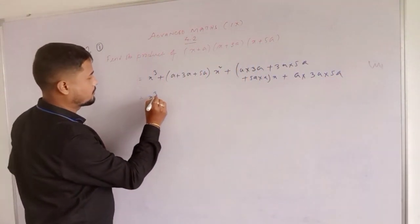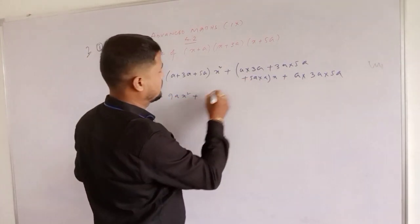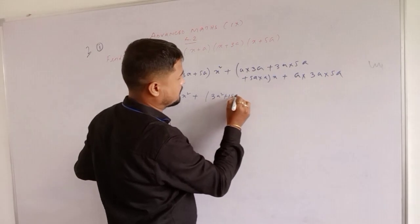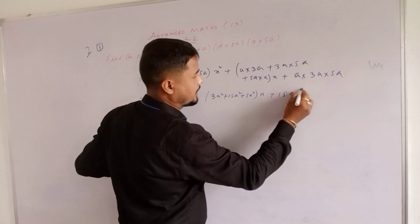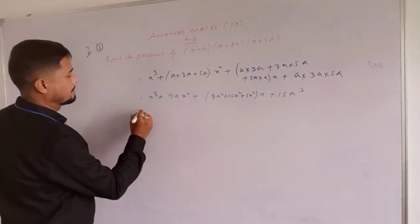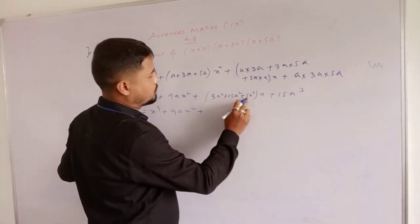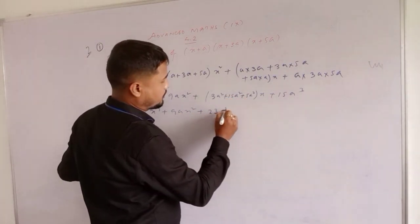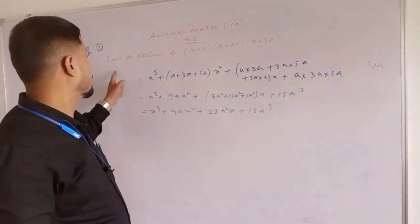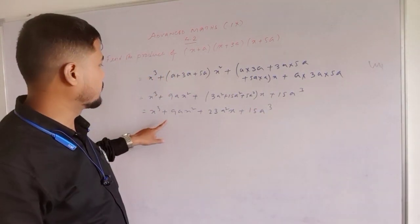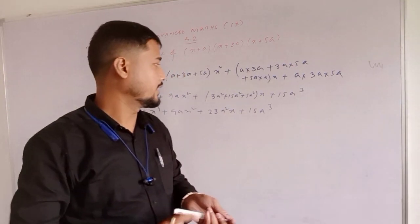We can write x cube plus 9a into x square plus 3a squared plus 15a squared plus 5a squared into x plus 15a cubed. That is x cube plus 9ax square plus 23a squared x plus 15a cube. That is question number 1.